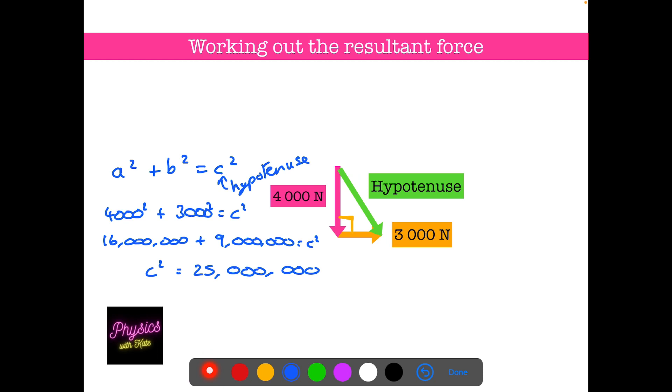Okay. Next thing we do is we're going to square root that. So c is going to be the square root of 25 million, which will give us 5000 newtons.